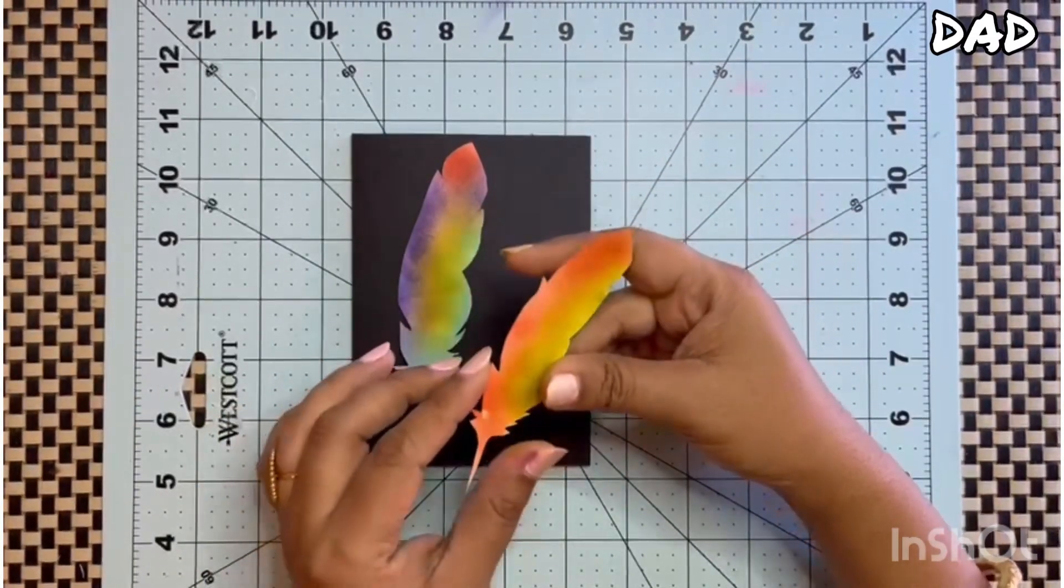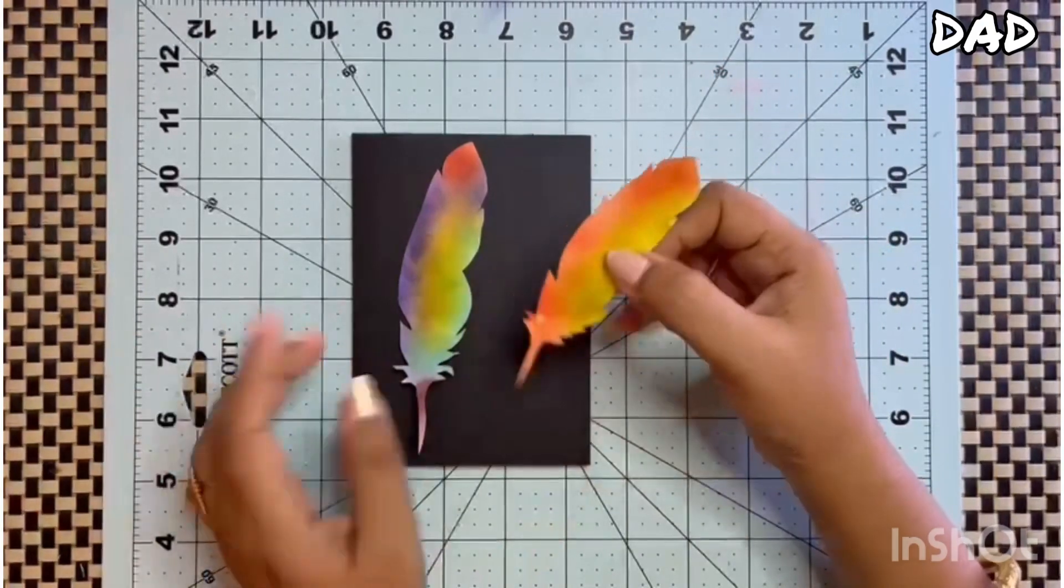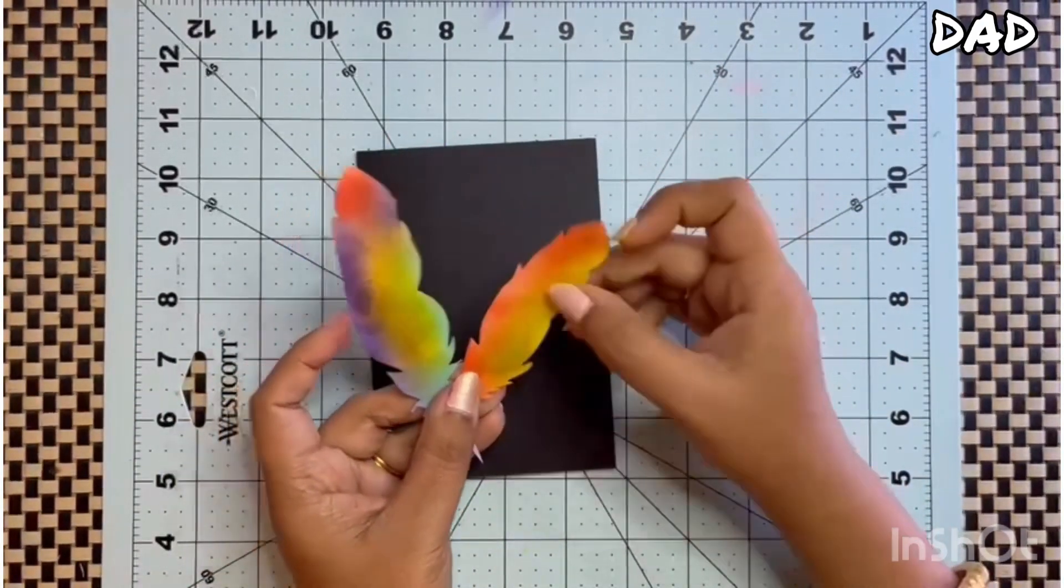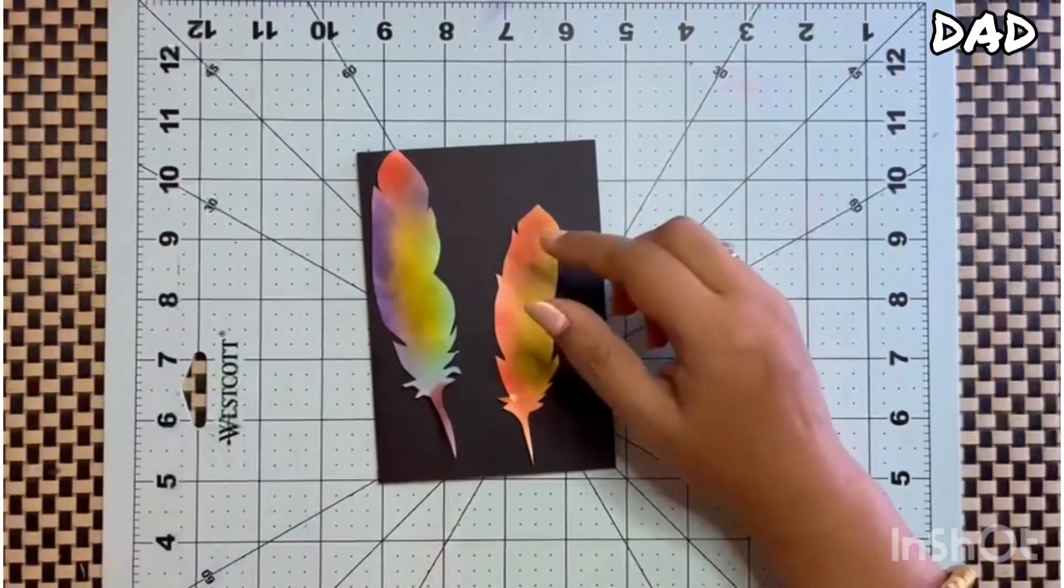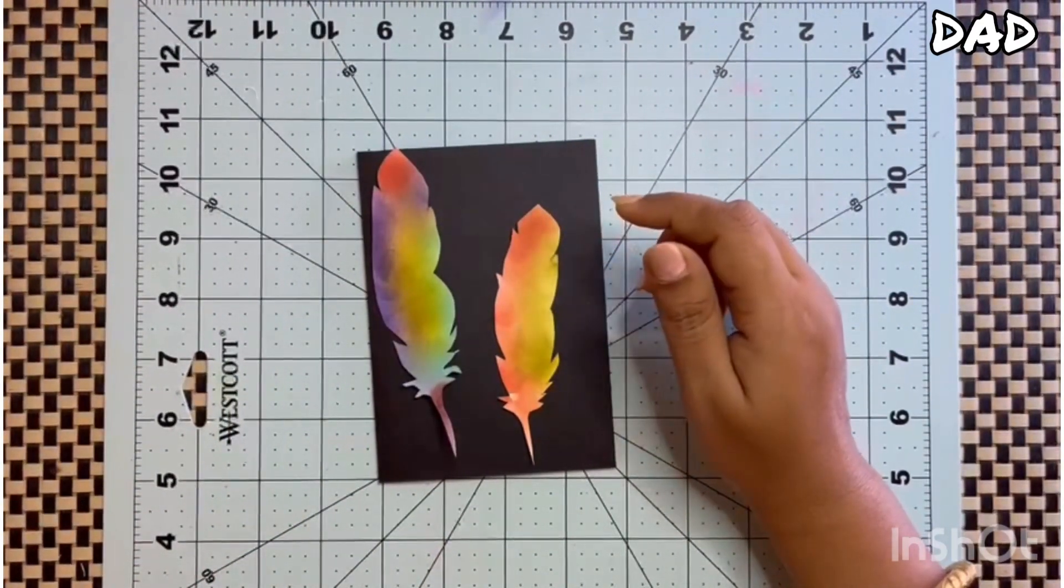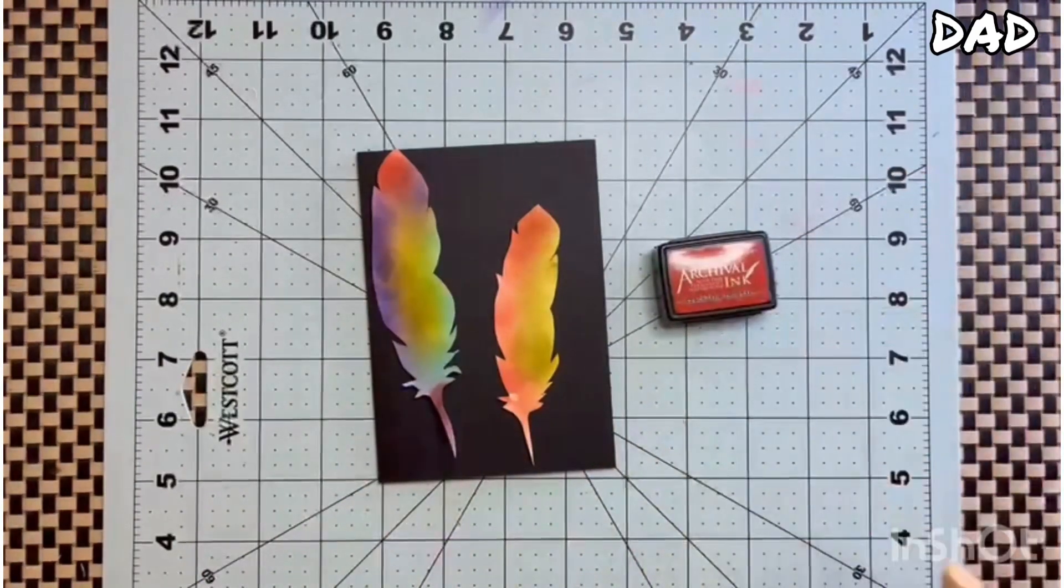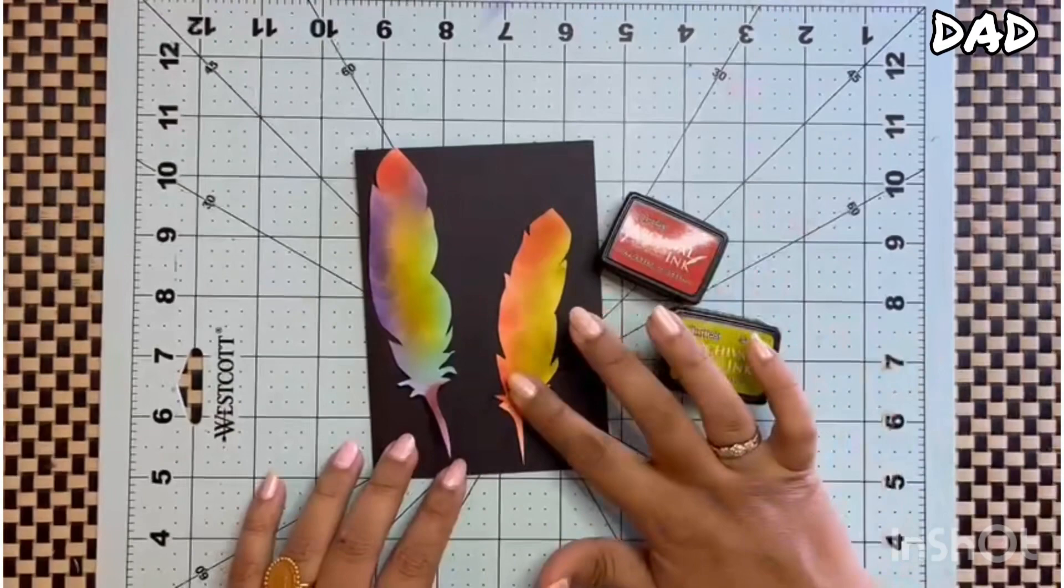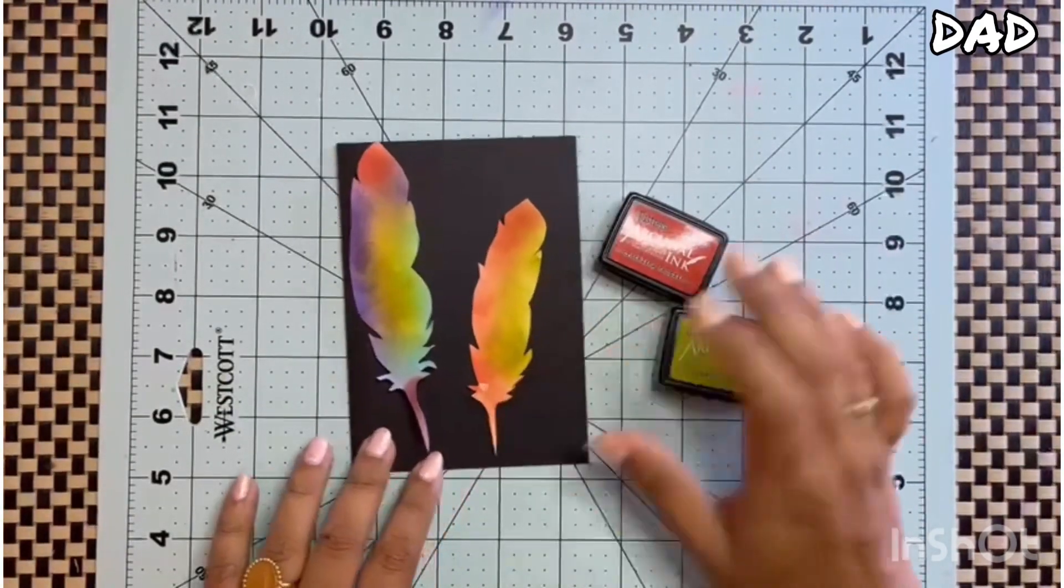The colors have blended very well, very nicely. So here I have used only two colors, that is my Crackling Campfire and the Olive Green. These two are the colors which I have used in the smallest one.